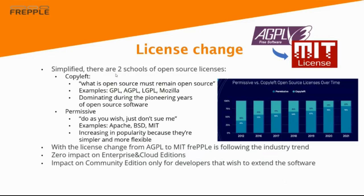This has zero impact on enterprise and cloud editions. Those customers are anyway covered by a proprietary license with FrePPL, so this license change does not impact them in any way. Also, the majority of community edition users will not really be impacted by this change. The only ones impacted are people working on the community edition who want to extend this software and publish or repackage it under another name — only those people will benefit from the new license. For the others, nothing really changes in practice.